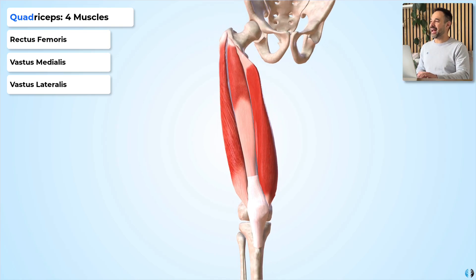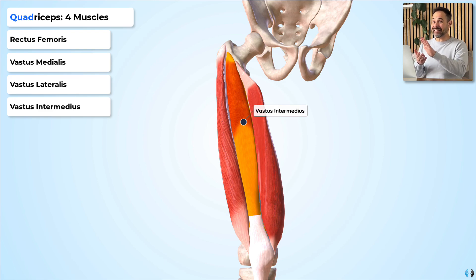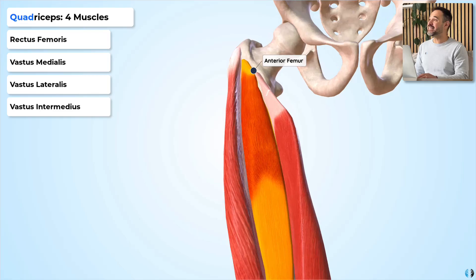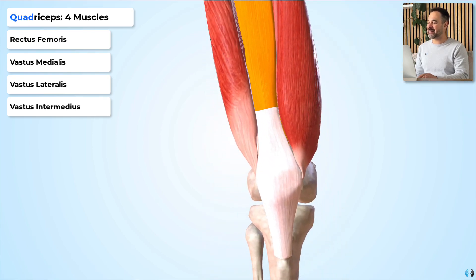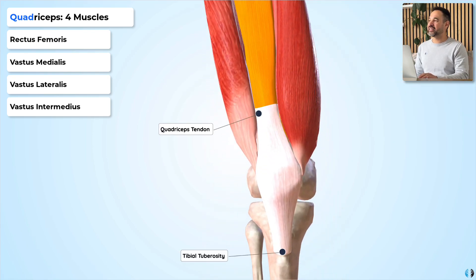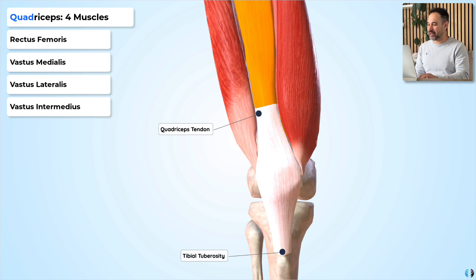Finally, we have vastus intermedius, located in the centre of the quadriceps but deep behind the rectus femoris muscle. Vastus intermedius originates from the anterior surface of the femoral shaft, runs down the centre of the anterior thigh, and inserts into the quadriceps tendon, which changes into the patellar tendon to insert into the tibial tuberosity of the tibia.